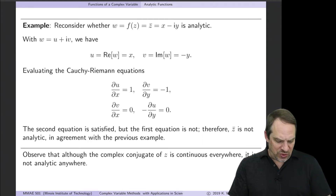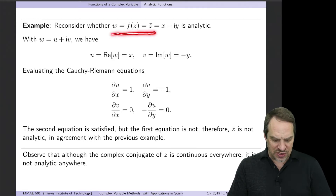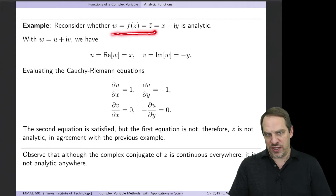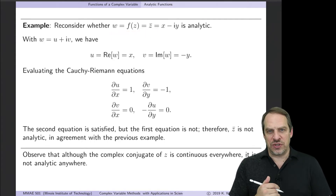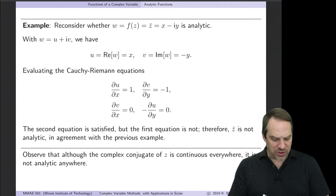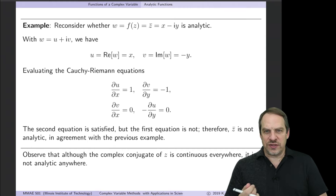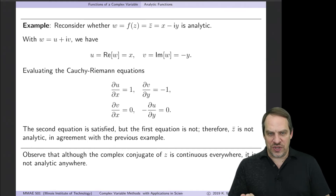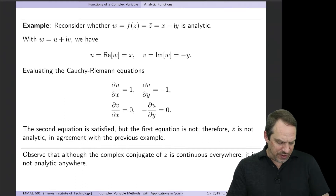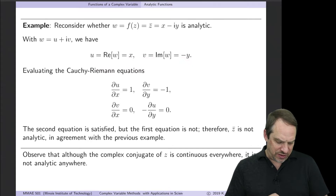Let's determine whether w equals f(z), which is the complex conjugate of z, is analytic. We already know the answer — it's not analytic. But now let's verify it using the Cauchy-Riemann equations, which is much simpler. So we have x minus iy, meaning u is x and v is minus y — u is the real part, v is the imaginary part.